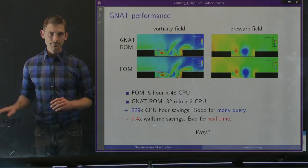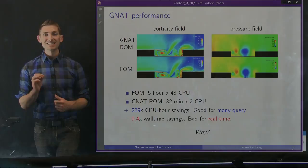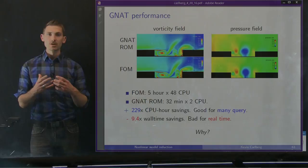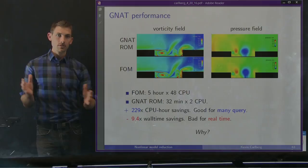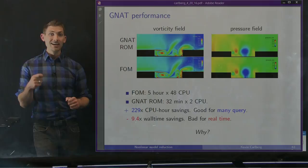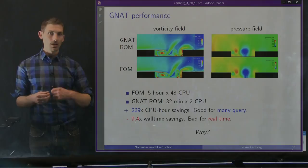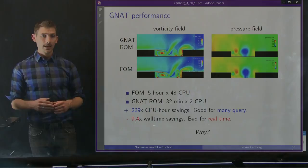Earlier, when I showed this cavity flow problem, I argued it was a very good result. We have the reduced order model generating savings of 229 times as measured in CPU hours. This is really good for many-query problems like uncertainty quantification, where you're allocated, say, 10,000 core hours on a supercomputer and want to do more Monte Carlo simulations. But if I care about near real-time problems and just want the answer as fast as possible, that's not the correct metric. We should be measuring in wall time, and if we measure in that metric, we're much less impressive — about an order of magnitude savings in wall time, which is good but not really enabling real-time simulations.